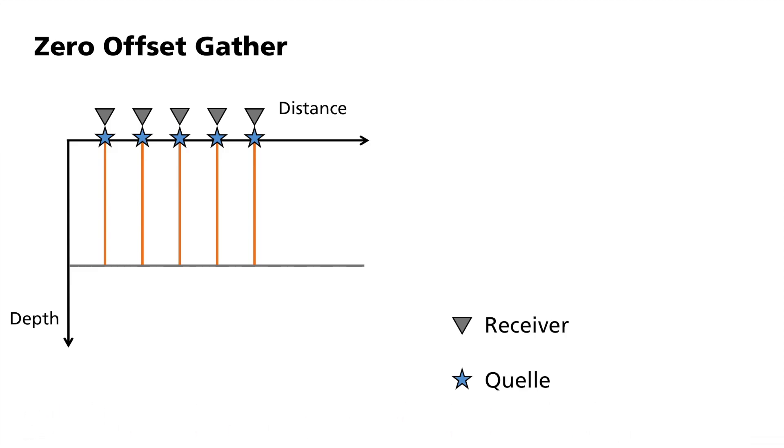The zero-offset arrangement is rather a gather variant, which is used only for modeling calculations. It is also used to derive true subsurface structures, also referred to as migration.